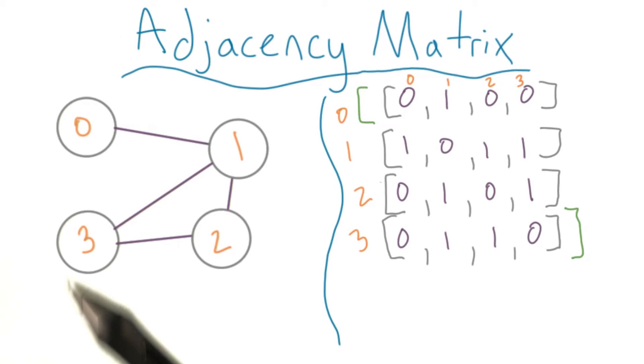If there's an edge between these two nodes, a 1 goes into the array. If there's no edge, a 0 is present.